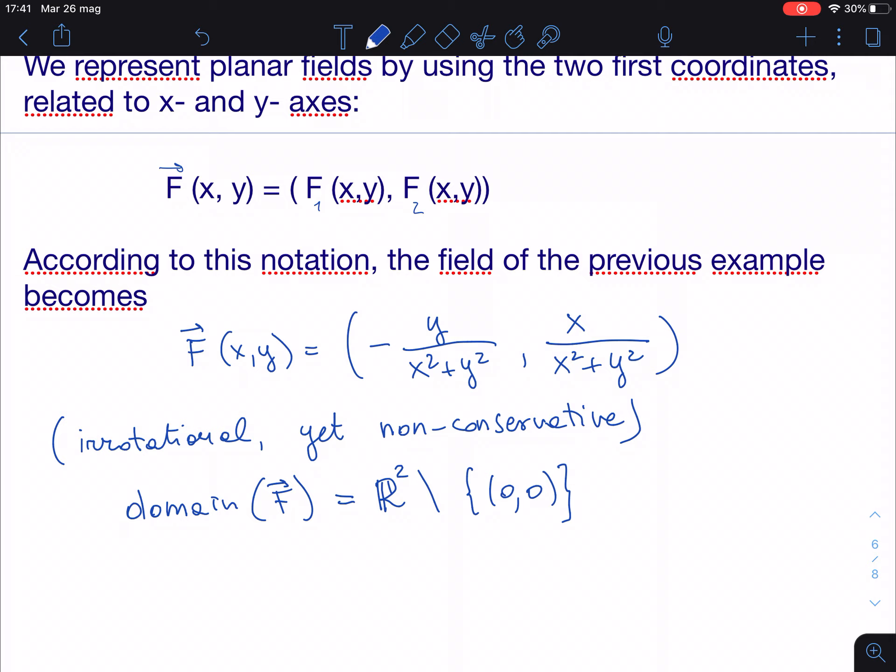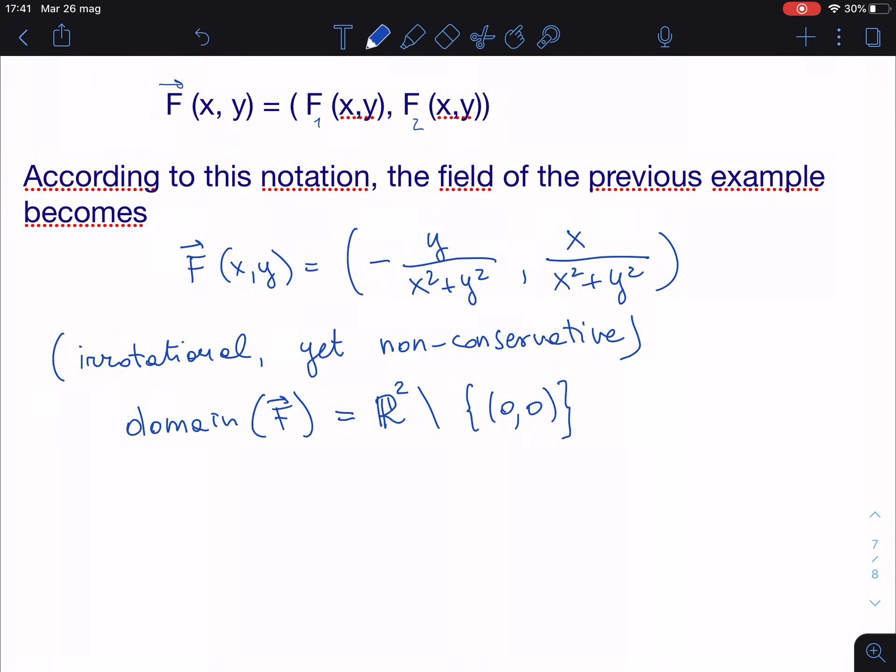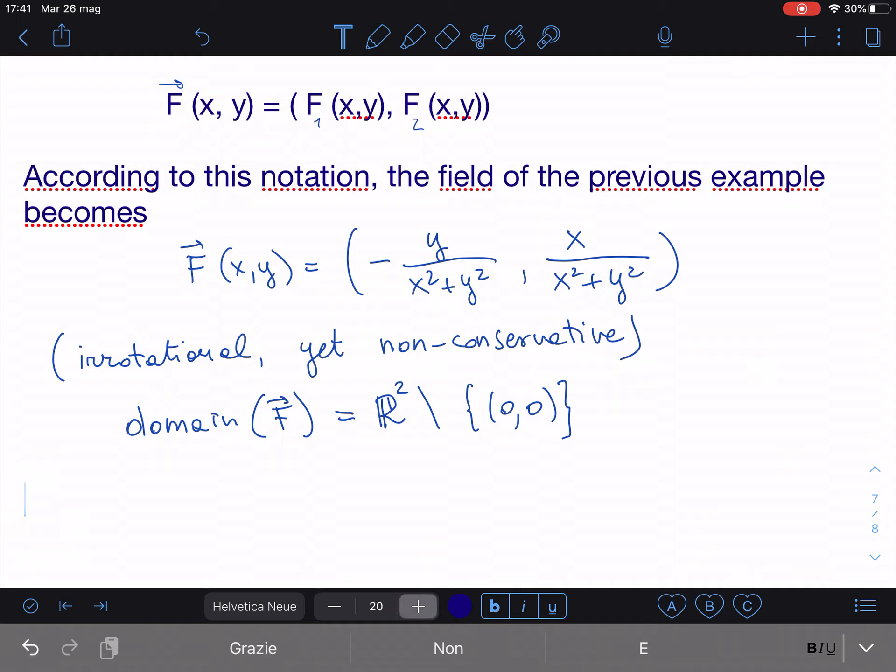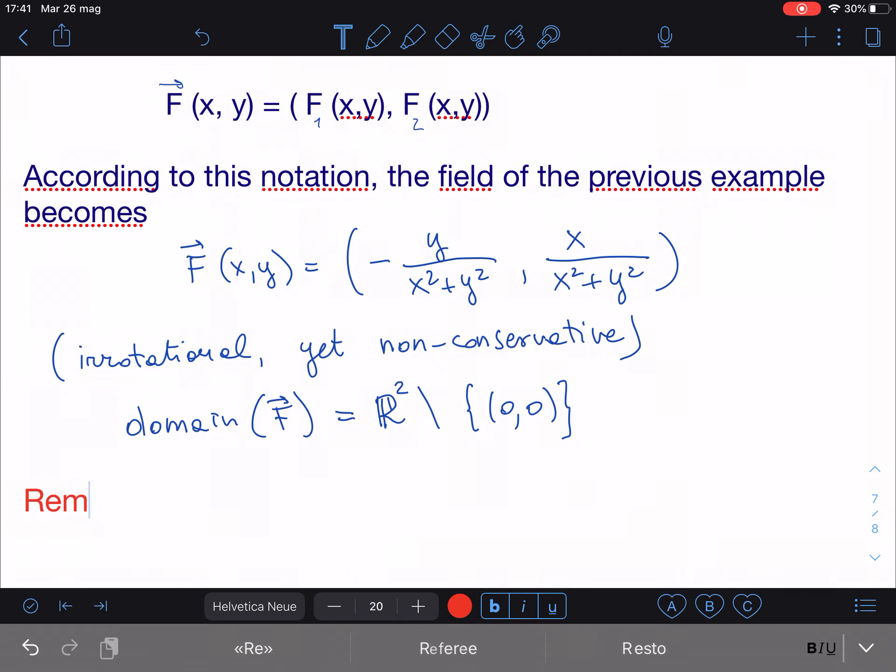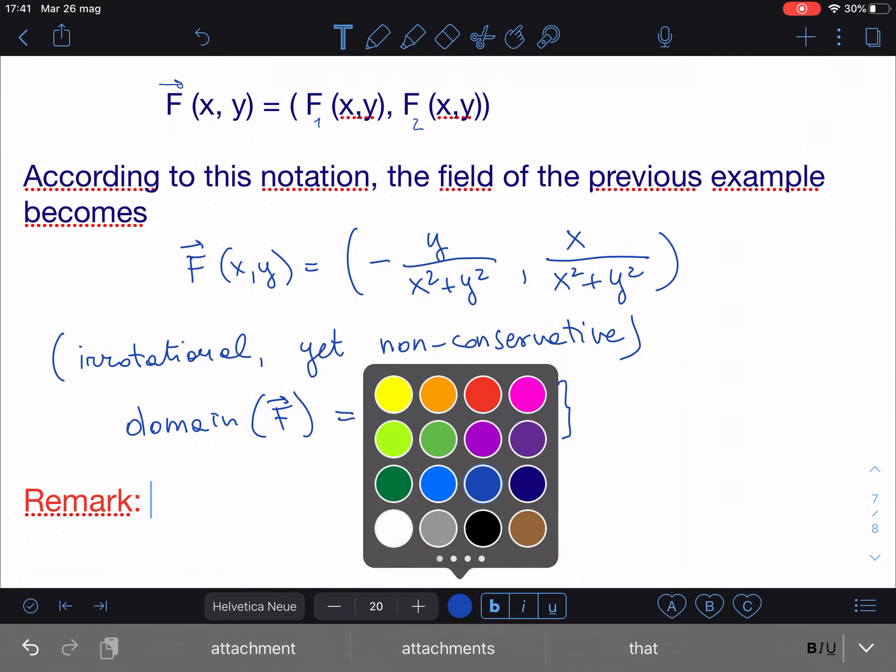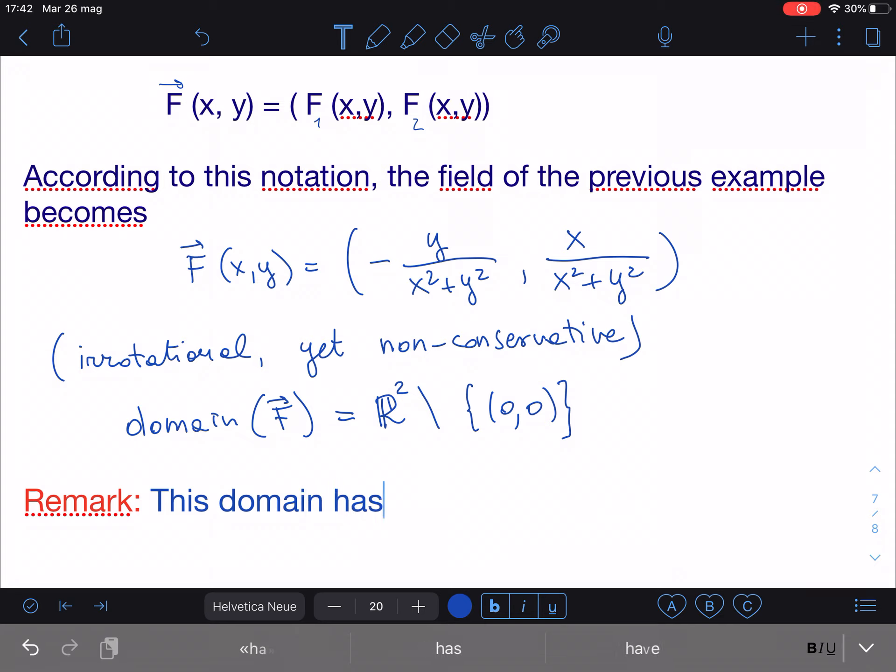And now, perhaps you won't believe it, the problem, the fact that this field, even though it is irrotational, is non-conservative, comes exactly from here. Comes from the fact that this domain has a hole. I want to write you in an informal way first and tell you that, so what happens is that we can draw a remark, an important remark. The remark is that this domain has a hole, which is the origin, and this is exactly the problem.